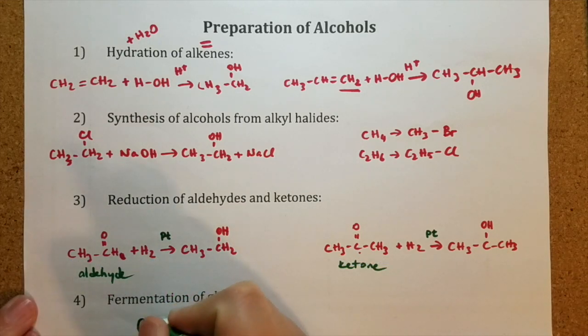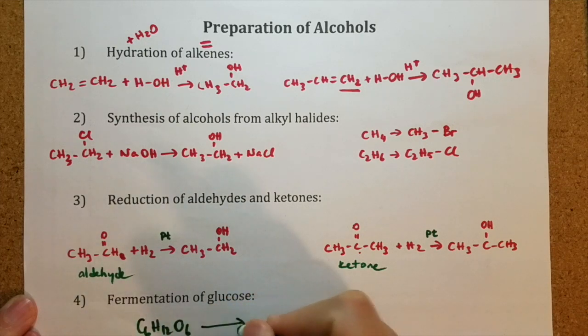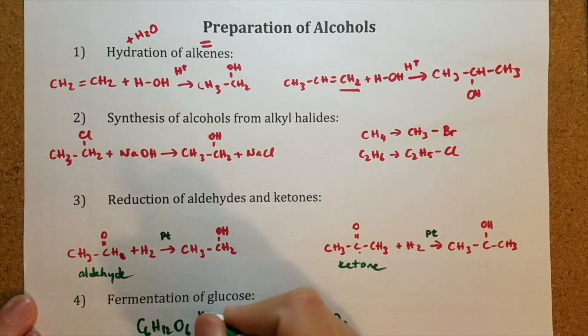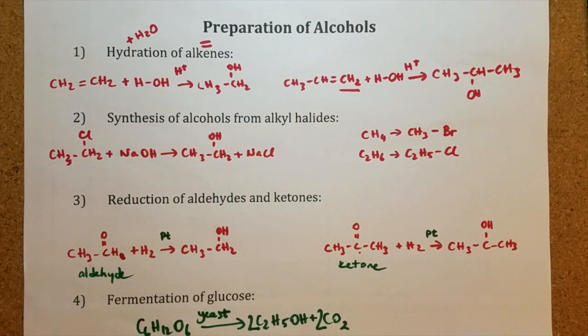This reaction is used to prepare alcoholic beverages like beer and wine. And yeast is often used as a catalyst for this process. In this reaction, carbon dioxide is also produced along with ethanol. This is the end of this video.